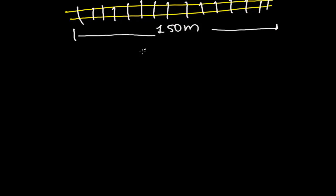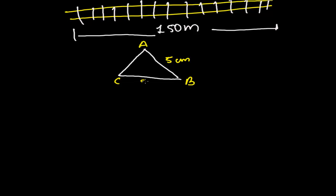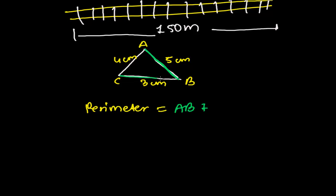Suppose I have a triangle like this, and the sides of this triangle are labeled A, B, C. Let me suppose AB is 5 centimeters, BC is 3 centimeters, and CA is 4 centimeters. So what is the perimeter of this triangle ABC? As I told you, perimeter is just the sum of the length of the boundary — so the sum of AB, BC, and CA.